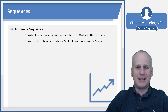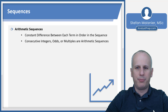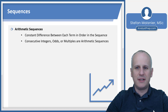Between consecutive odds — 1, 3, 5, 7, 9, and so on — you have a difference of 2 between each of the terms. And you could do any multiple as an arithmetic sequence, such as the multiples of 5: 5, 10, 15, 20, 25 — you have a constant difference of 5.